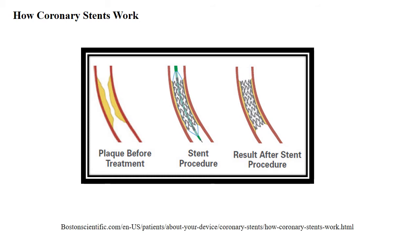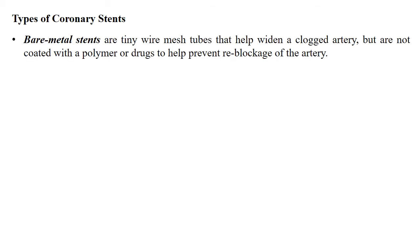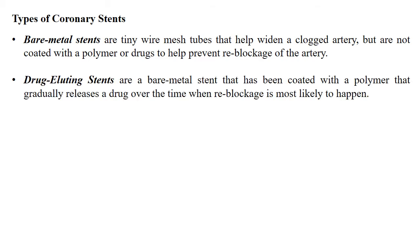Next, types of stents. There are different types of stents available. The first is bare metal stents — these are tiny wire mesh tubes that help widen a clogged artery but are not coated with a polymer or drug to help prevent reblockage. Another is the drug eluting stent — these are bare metal stents coated with a polymer that gradually releases a drug over time when reblockage is most likely to occur.